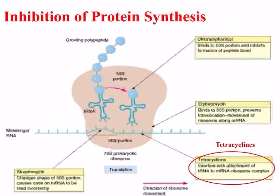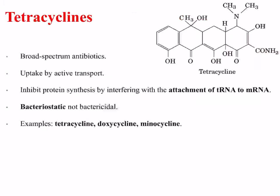Our third family is the tetracyclines, which are indicated on the diagram and can interfere with the attachment of tRNA to mRNA-ribosome complexes. Tetracyclines are recognizable by their four rings, as shown in their prototypical member tetracycline in the diagram on the right. They are generally broad spectrum antibiotics; their uptake into bacterial cells is by active transport. They inhibit protein synthesis by interfering with the attachment of tRNA to mRNA, are generally bacteriostatic, and examples include tetracycline, doxycycline, and minocycline.